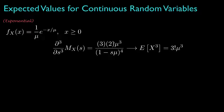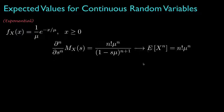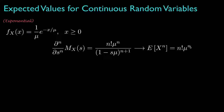The third derivative is three times two times mu cubed over one minus s times mu, quantity to the fourth. Evaluating at s equals zero gives the third moment as three factorial times mu cubed. In general, the nth derivative is n factorial times mu to the n over one minus s times mu, quantity to the n plus one, so the nth integer moment for x is n factorial times mu to the n.